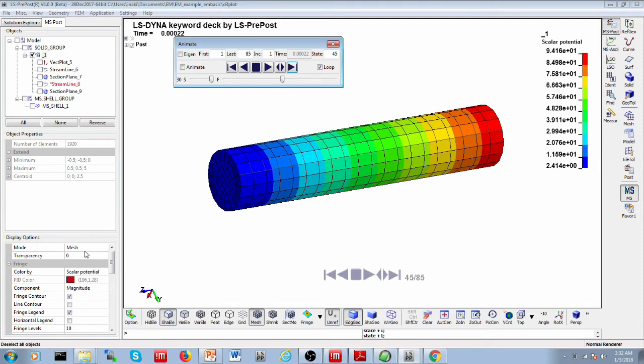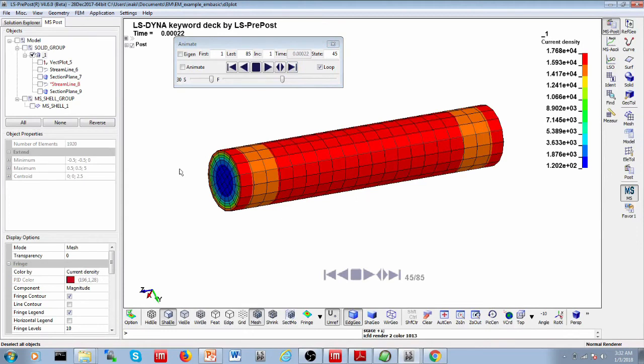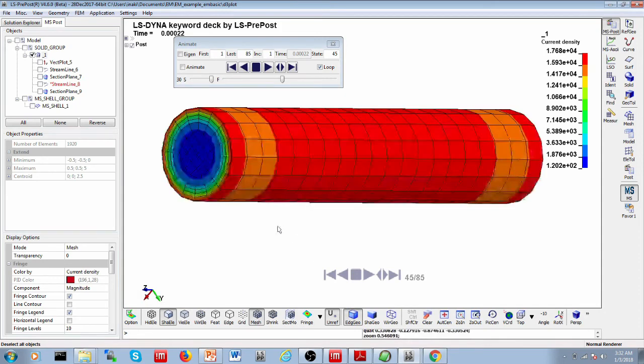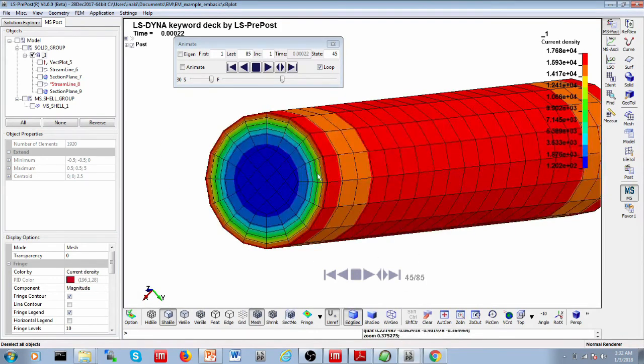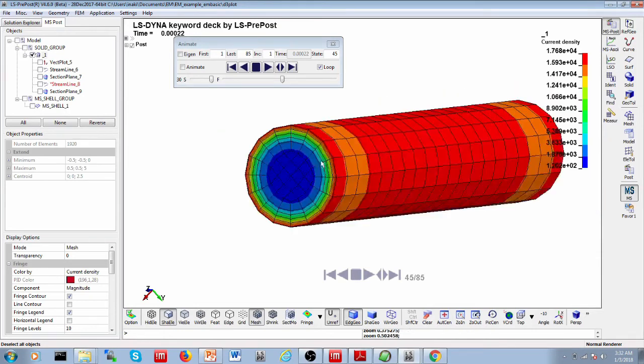And then other things which you can notice, you can also display the current density, and this we will see in more details in our next video, but already we can observe something interesting, is that the current is not uniform across the thickness of the rod. It diffuses through the thickness with higher values at the surface and lower values at the center.